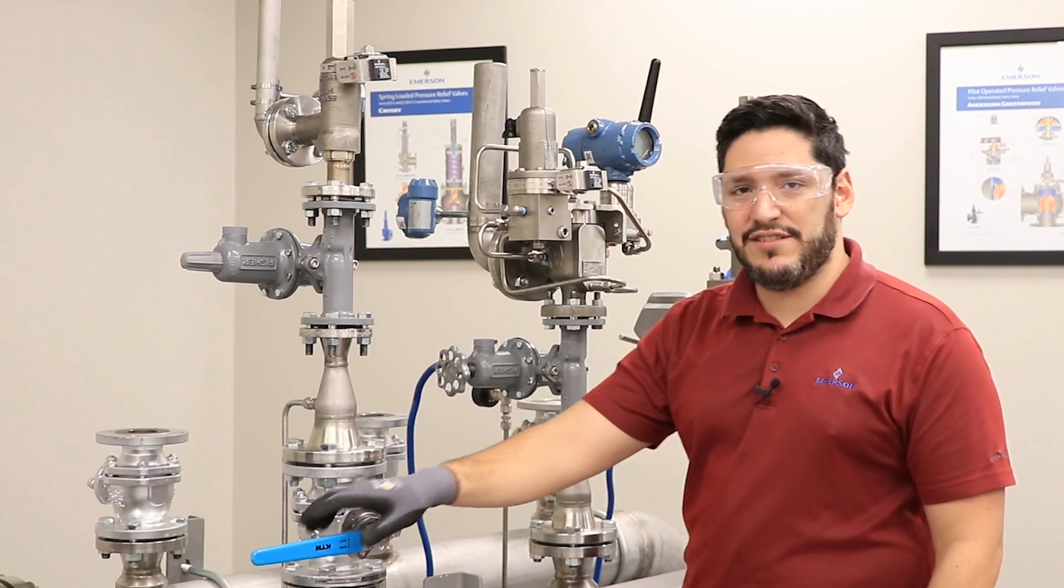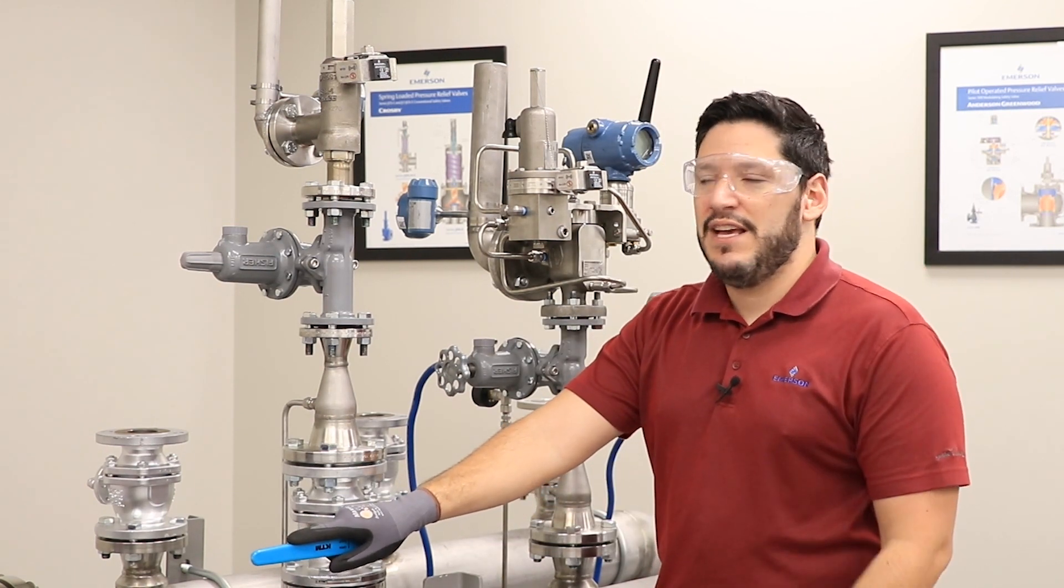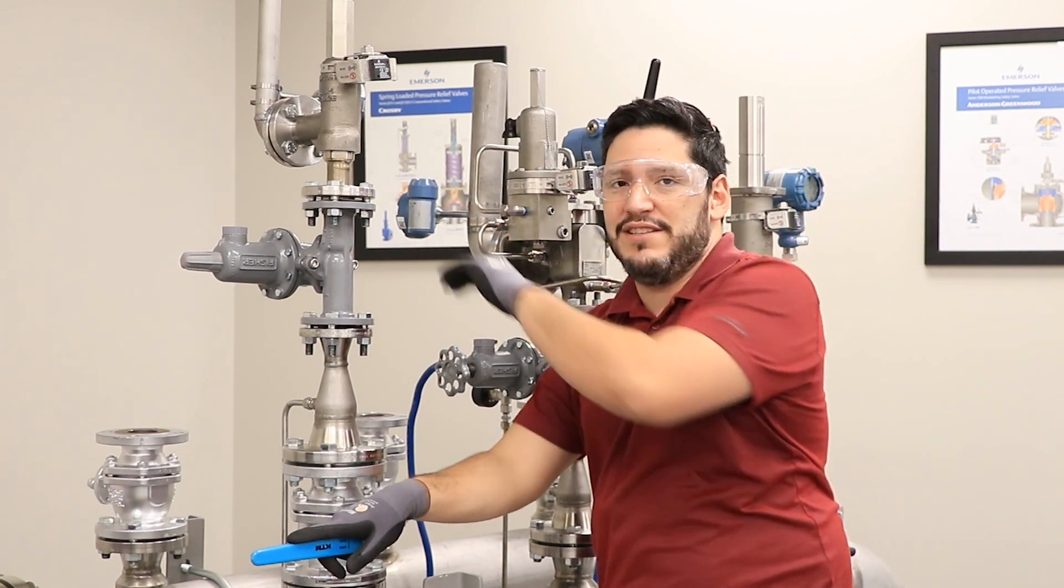Next, we're going to open up the isolation valve underneath this valve to create a pressure relief event. And the 708 is going to catch that.